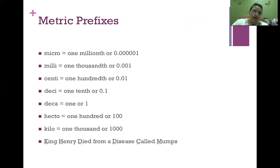Let's talk about metric prefixes. These should look familiar to you. Micro is one millionth. Milli, one thousandth. Centi, one hundredth. Deci, one tenth. Deca, one. Hecto, one hundred. Kilo, one thousand. And then we have this nice little mnemonic that helps us remember those: King Henry died from a disease called mumps. So we have kilo, hecto, deca, deci, centi, milli, and I guess you just have to remember micro.